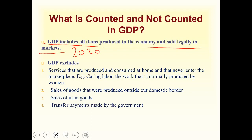Fourth, transfer payments made by the government are not included — for example, subsidies or income support programs like Pakistan's Benazir Income Support Program. Fifth, intermediate goods used to produce other final goods are also not included in GDP.